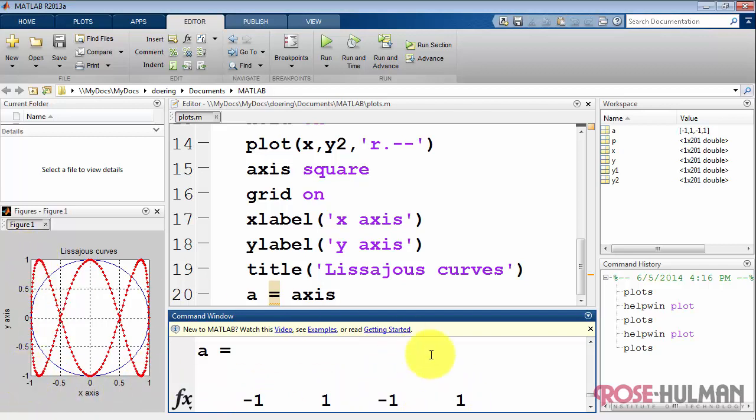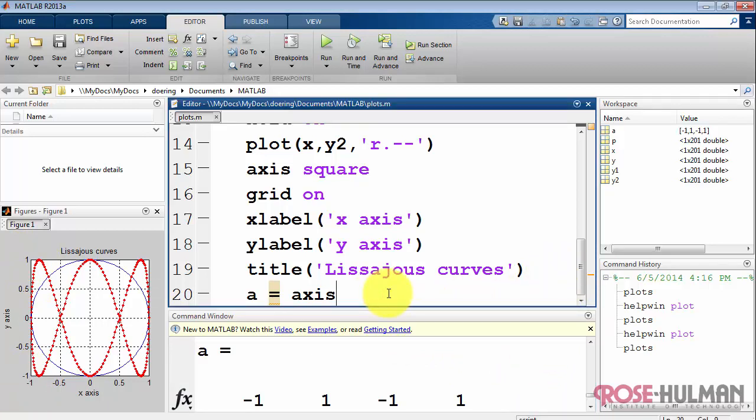The first two values are the x-limits from lower end to upper end. The last two values are the y-axis limits. And again, we see the minus 1 and plus 1.